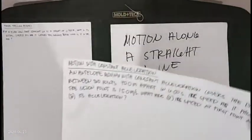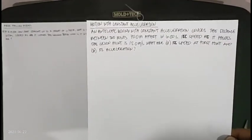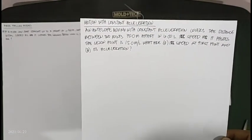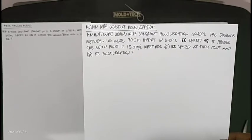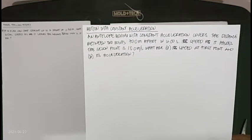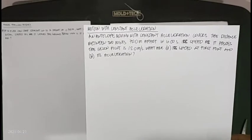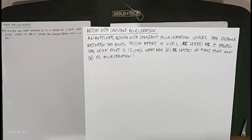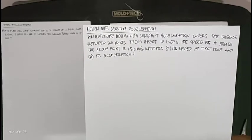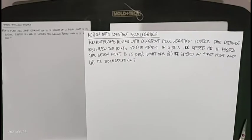Next, we are going to have an example on motion with constant acceleration. The problem states: an animal moving with constant acceleration covers the distance between two points 70 meters apart in 6 seconds. Its speed as it passes the second point is 15.0 meters per second. What are its speed at the first point and its acceleration?